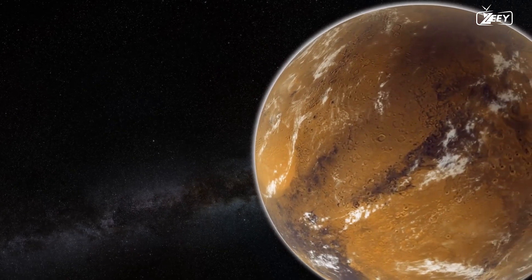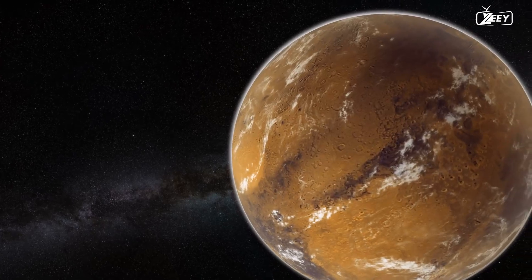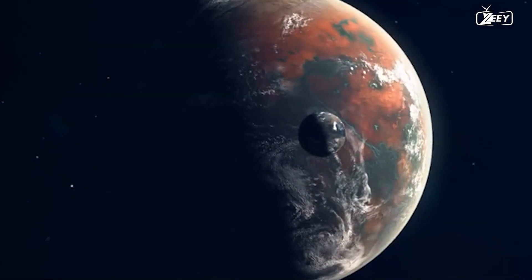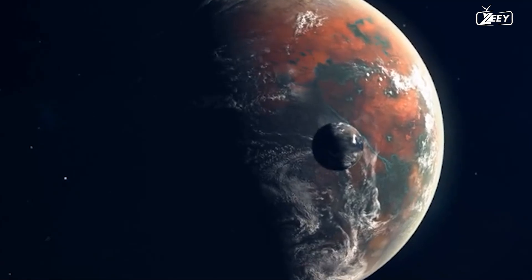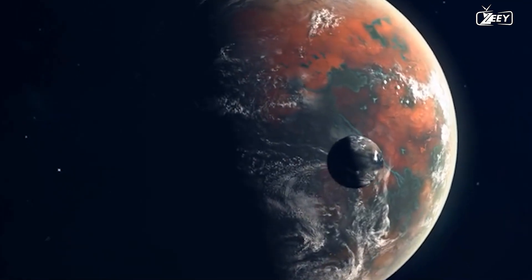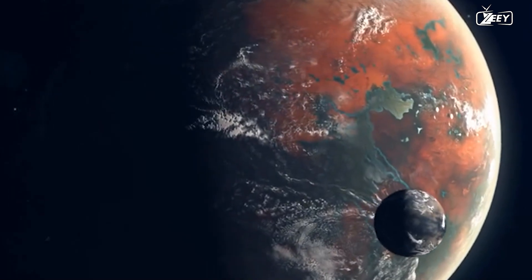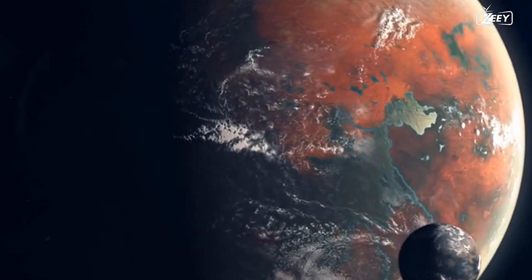Kepler-186f, a planet recently discovered 493 light years from Earth, is around the size of Earth and is in the habitable region of its solar system. The majority of known exoplanets at this time are bigger and hotter than Earth, which makes them reasonably simple to find but uninteresting for the hunt for life.